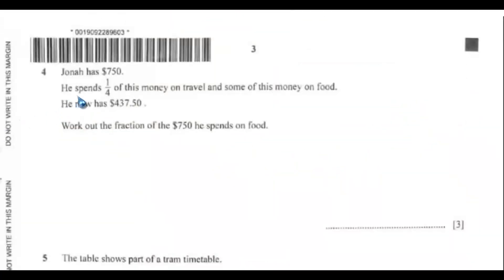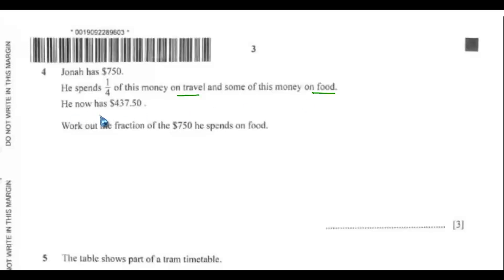Question 4. Jonah has $750. He spends one quarter of this money on travel and some on food, and he now has $437.50 left. Work out the fraction of the $750 he spends on food.